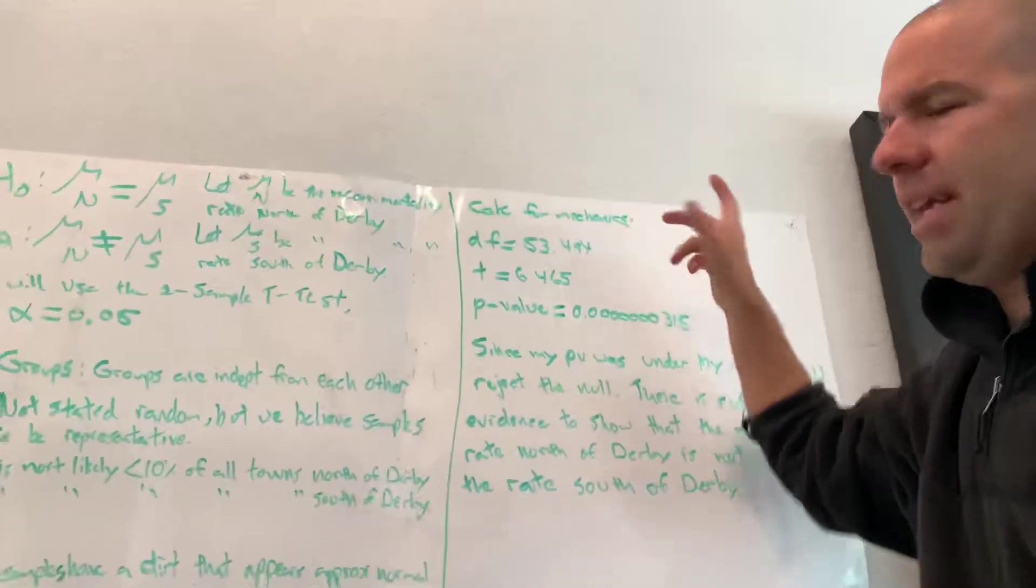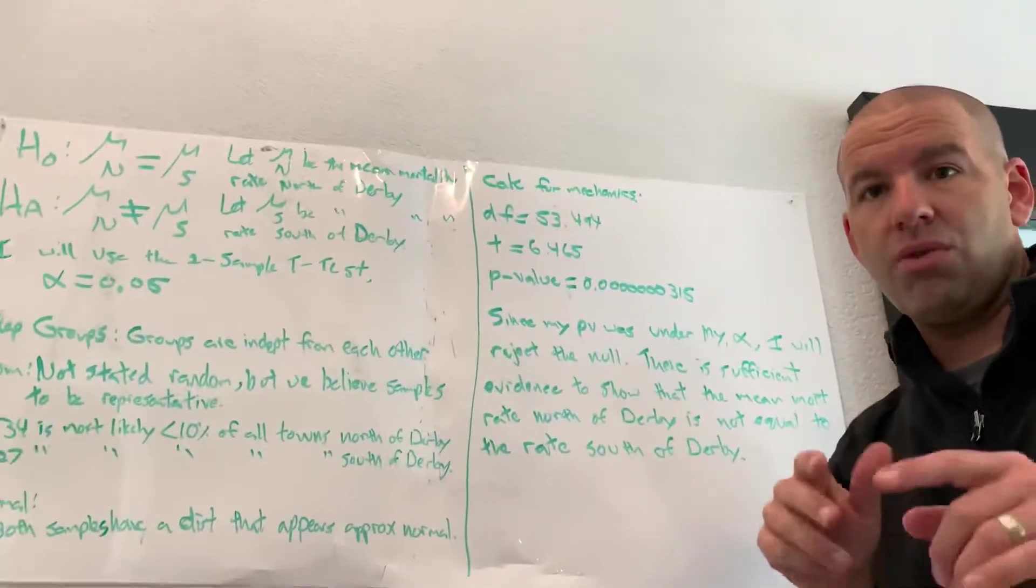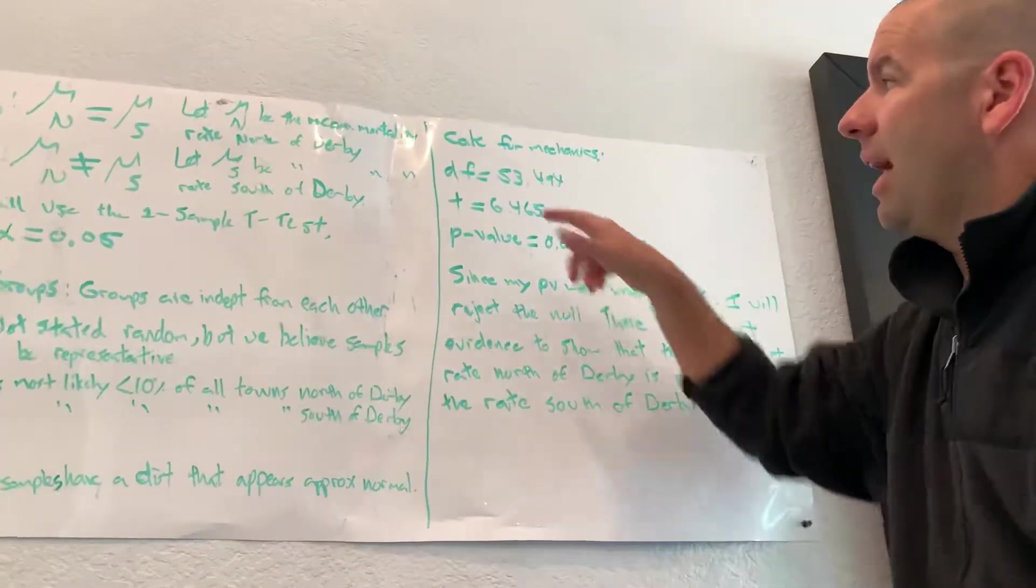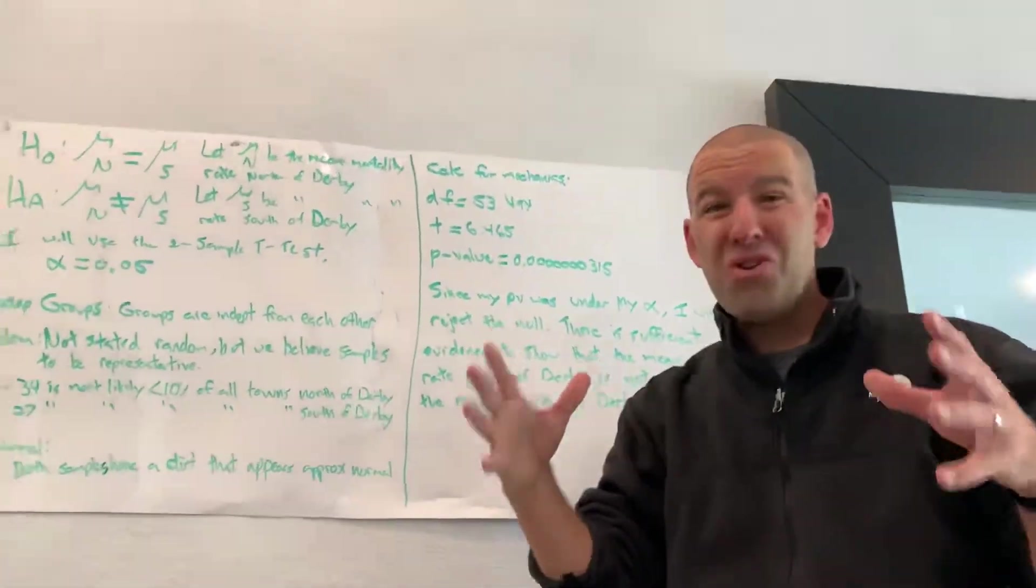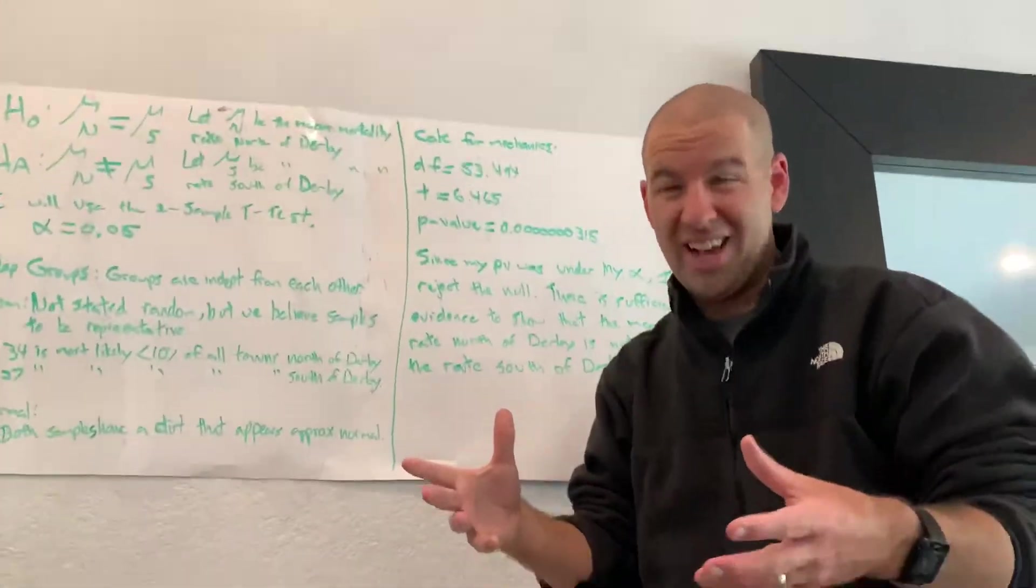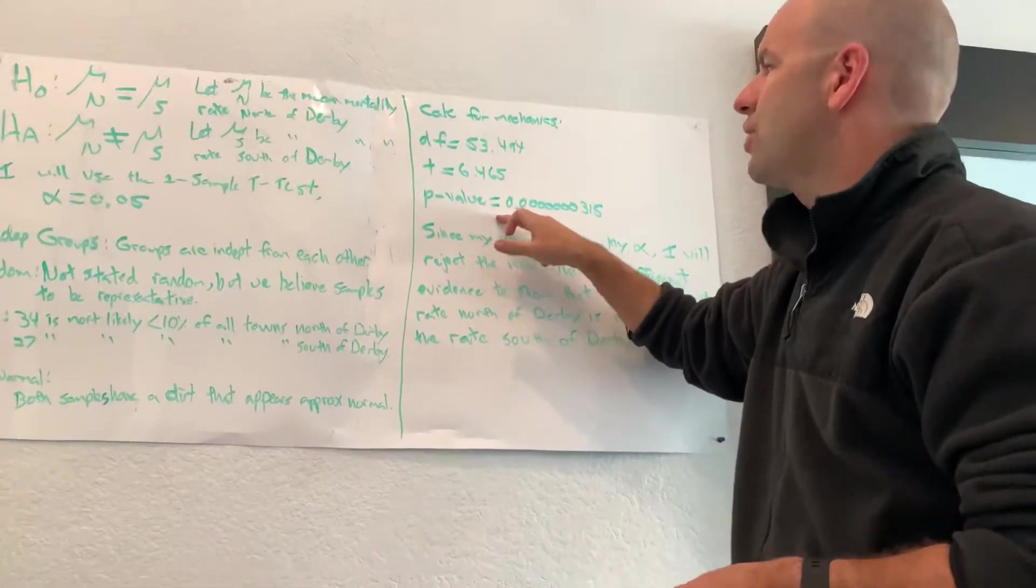For the calculator mechanics, they gave us statistics, not data, so I plug all that stuff into the two-sample t-test. I get a degree of freedom of 53, t of six. So that is a huge t-score, right? Six. Which means with a large t-score, I have a very small p-value. So super small.